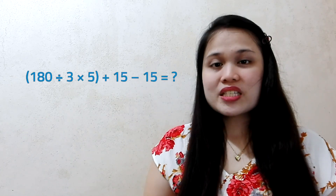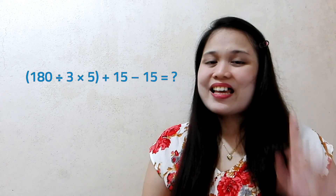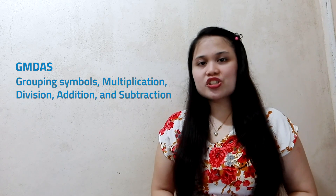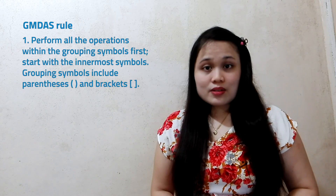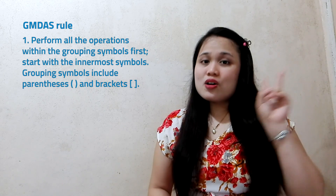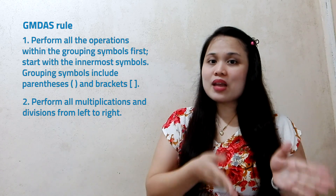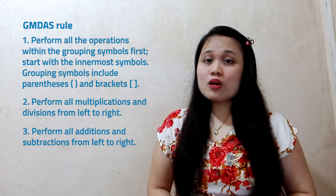But wait, there's more. Let's try solving this one. Can you see the difference in this expression and the previous ones we answered? This expression involves grouping symbols. To find the value of an expression that involves grouping symbols, we follow another rule called GMDAS, which stands for grouping symbols, multiplication, division, addition, and subtraction. Number 1: perform all operations within the grouping symbols first, starting with the innermost symbols. Grouping symbols include parentheses and brackets. Number 2: perform all multiplications and divisions from left to right.